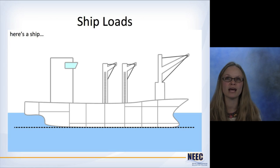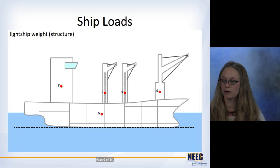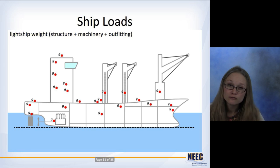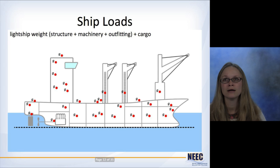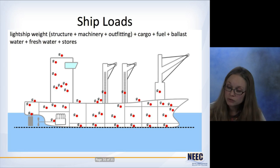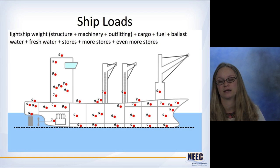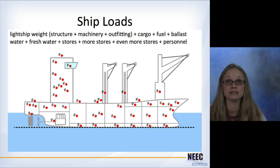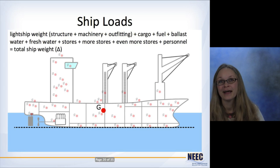So here's an example. Here we have a ship. For the lightship weight, we have some structure. Each of them has its own little center of gravity marked with a little red dot and a lowercase g. So you've got structure, some machinery, some outfitting, some cargo, fuel. I've got some ballast water in here, some fresh water for drinking, some stores, more stores, even more stores, and some personnel, right? And now your ship looks like it has some sort of horrible disease.